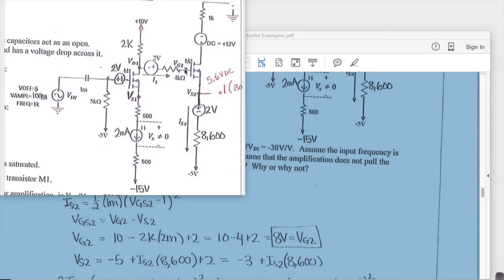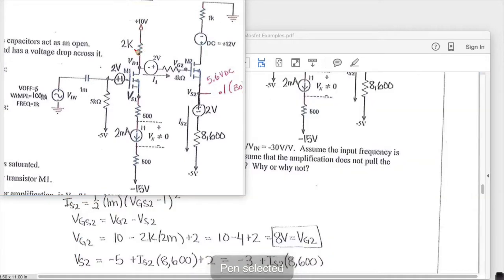So now I know VG2, VS2 and the currents in this branch. The other thing that I want to find is VS1 and so in order to do that we already know the current 2 milliamps so we can actually set that up to solve for VGS1. So IS1 is given and then it's the 1 half Km' W over L VGS minus VT squared and we can solve that.